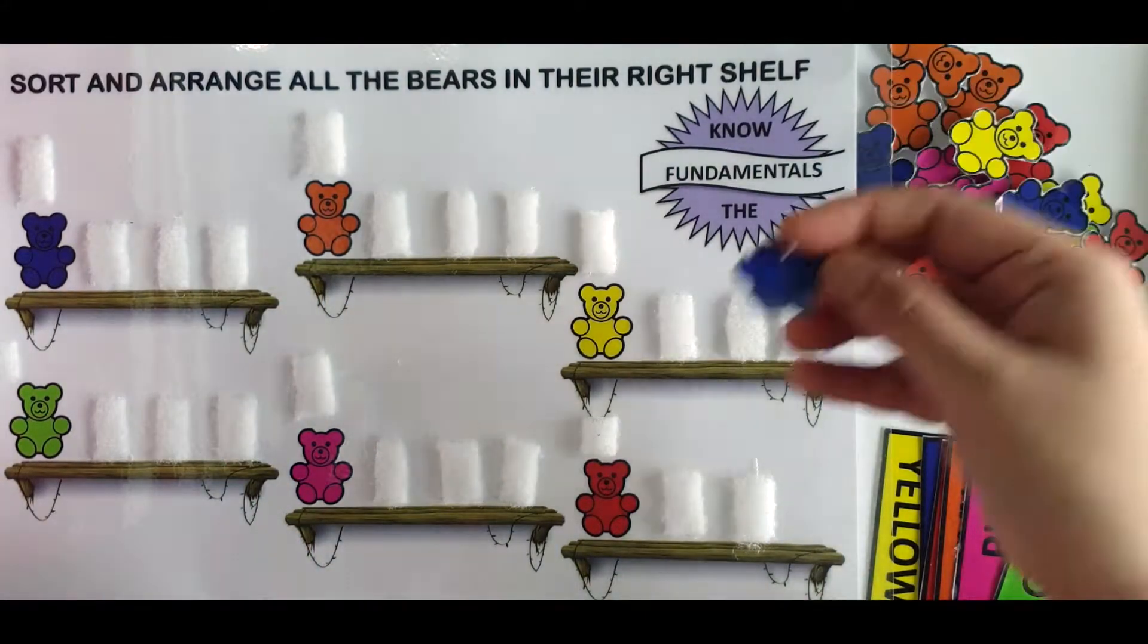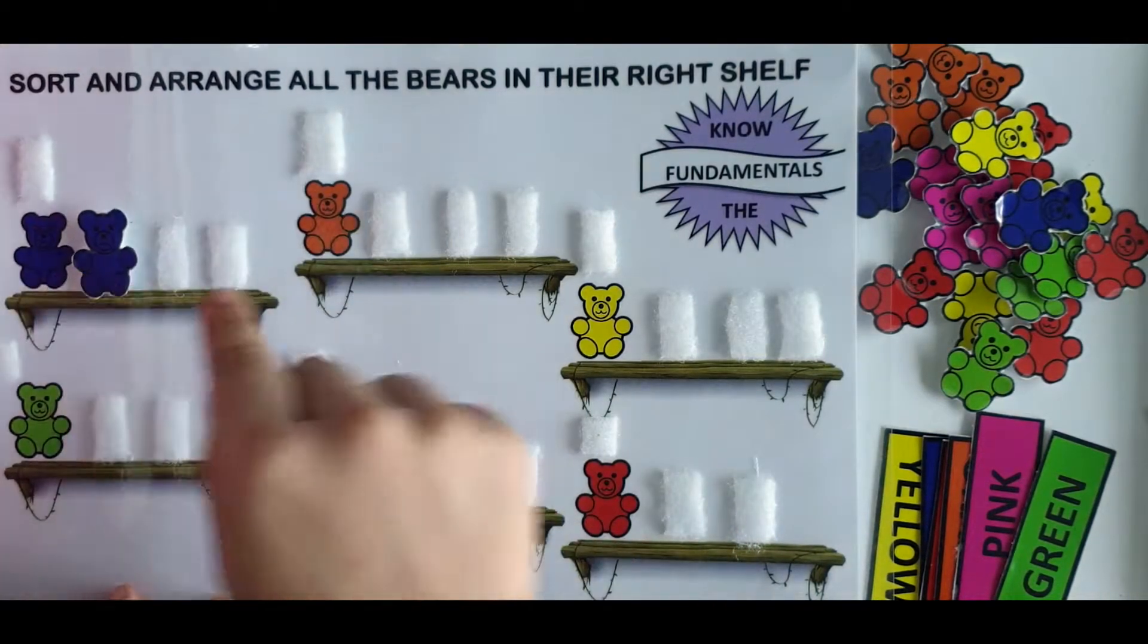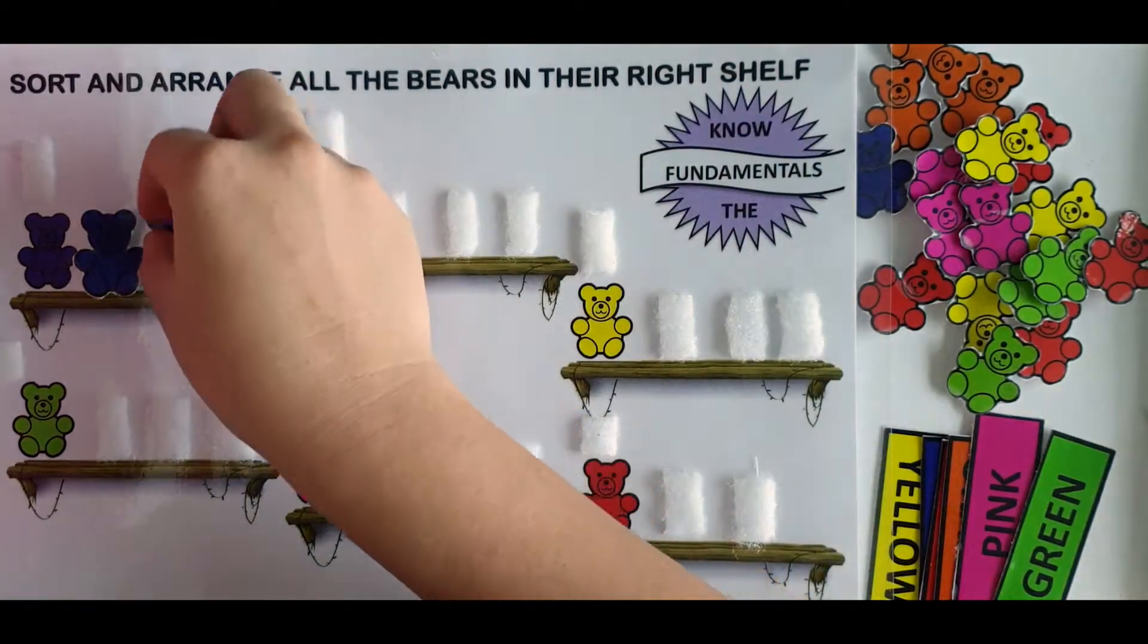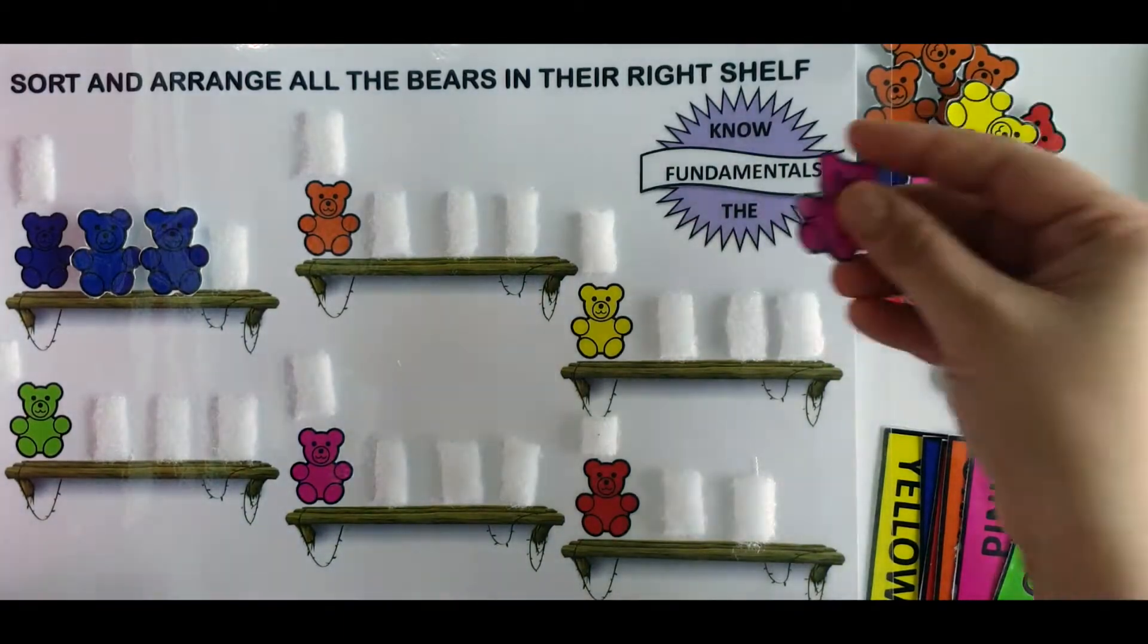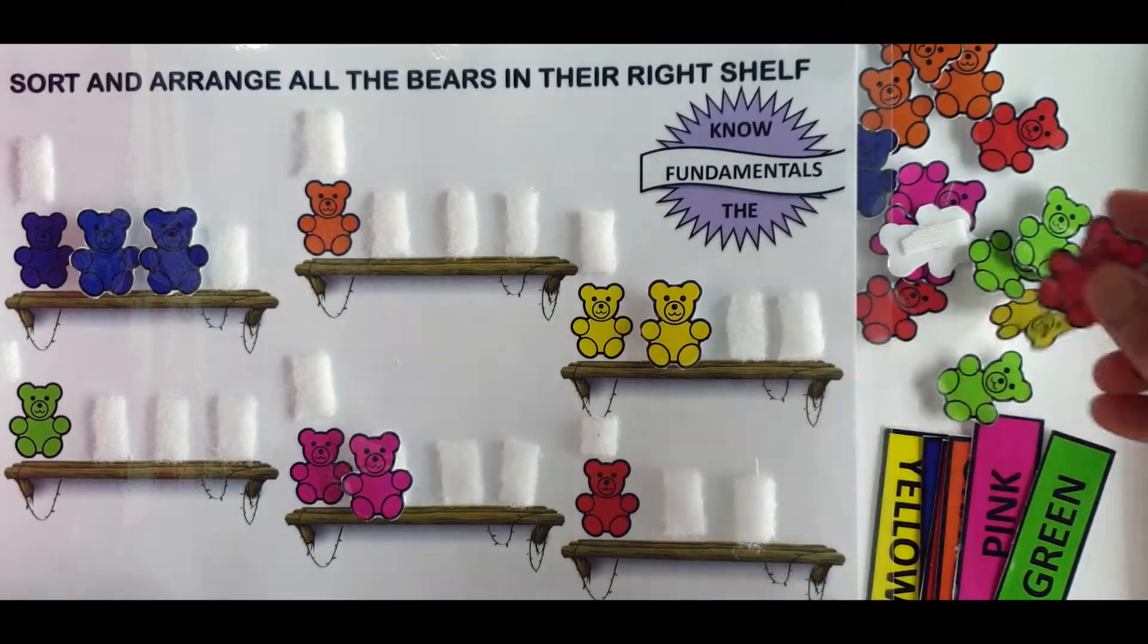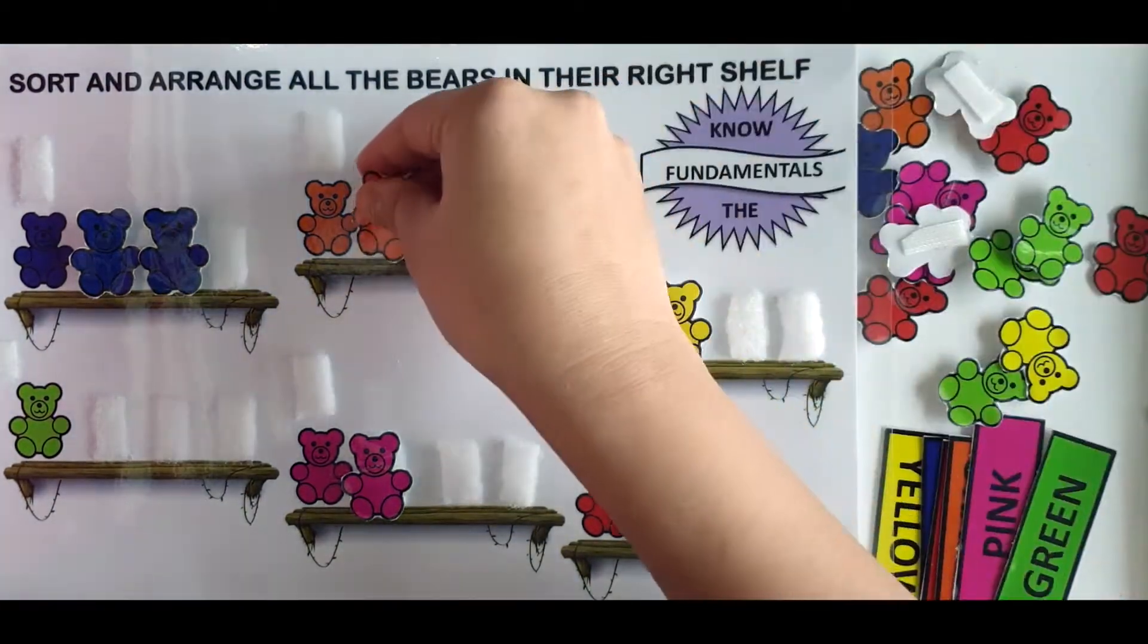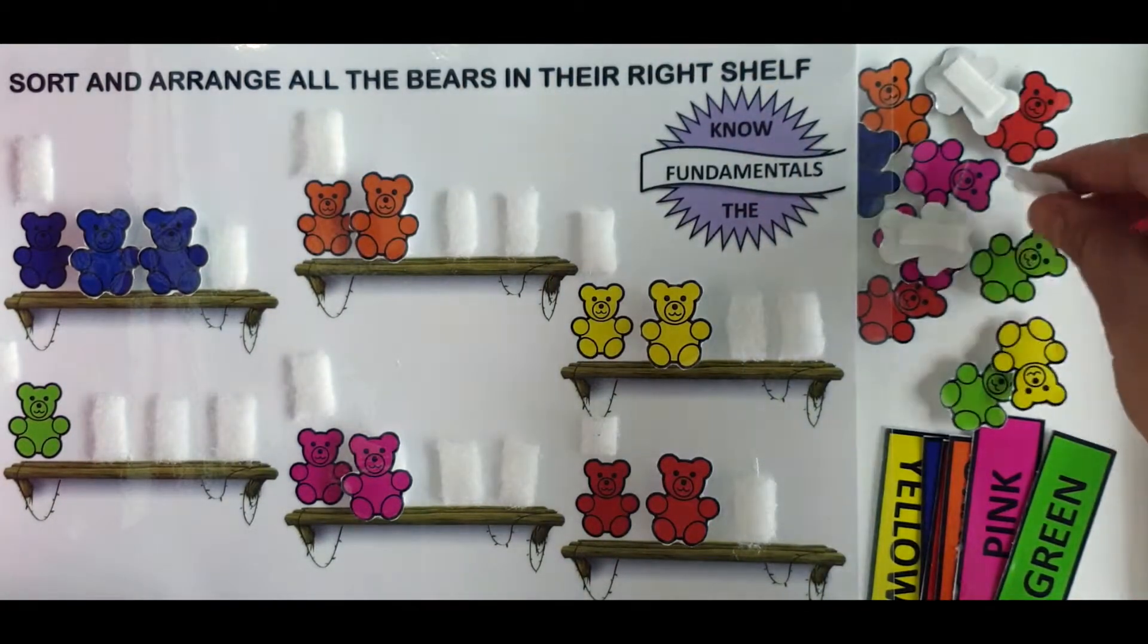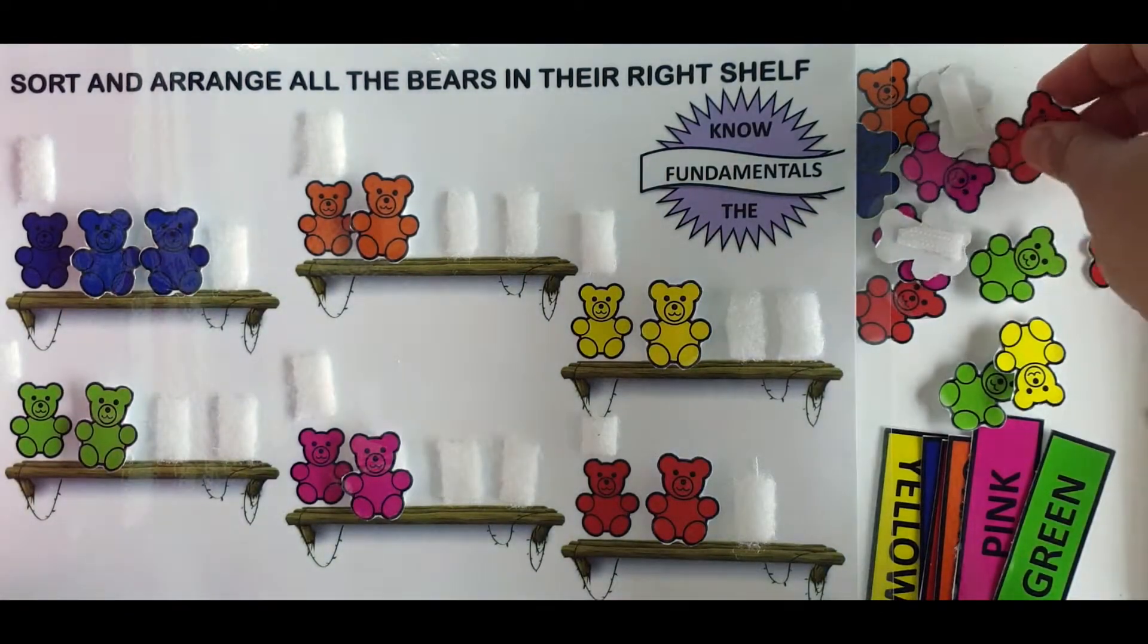So say for example this is blue so they will put in a blue shelf, pink, yellow, red, orange, green and so on. So they keep sorting and putting the bears in the right shelf.